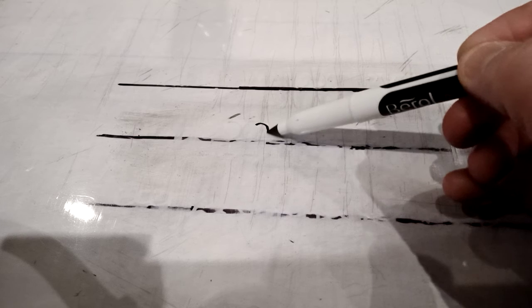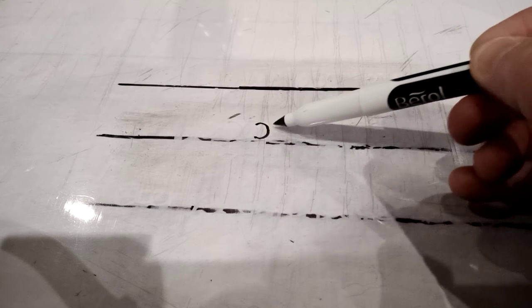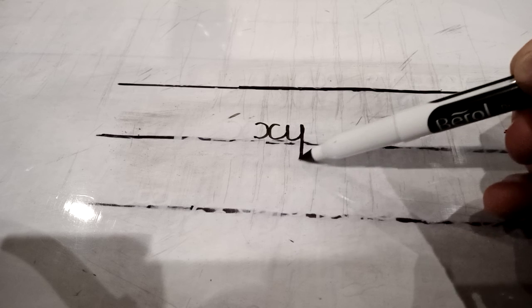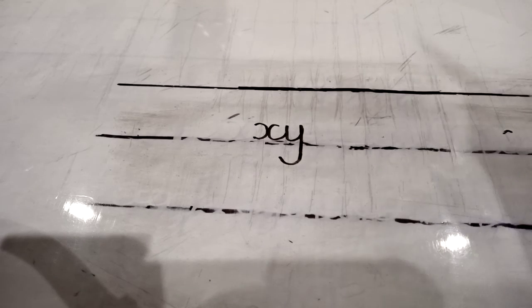And then the last one we'll have a go at is X and a Y. So X, come off, and then a Y. Do me 20 each of those joins, please. Thank you.